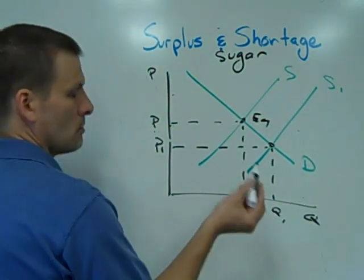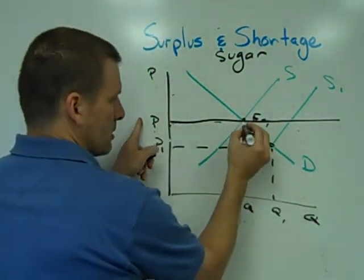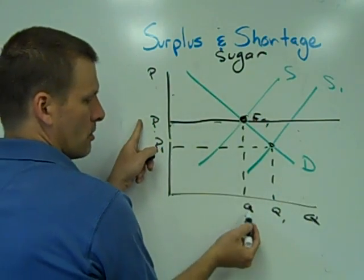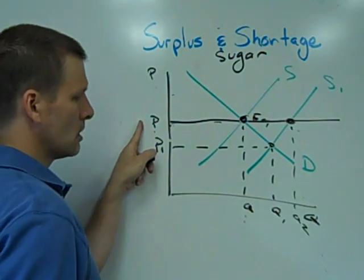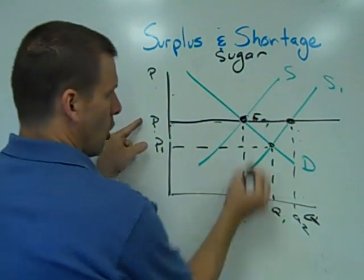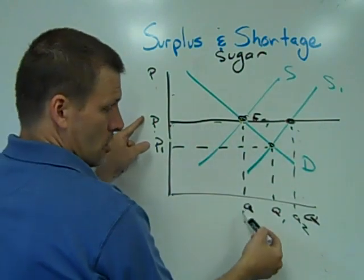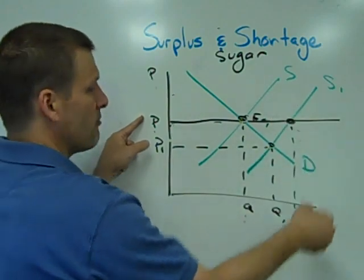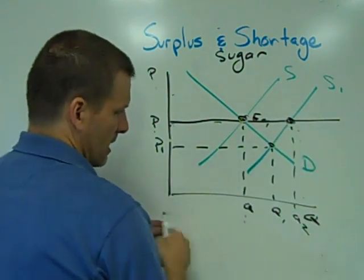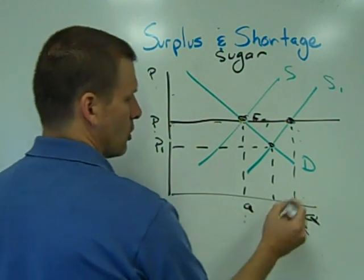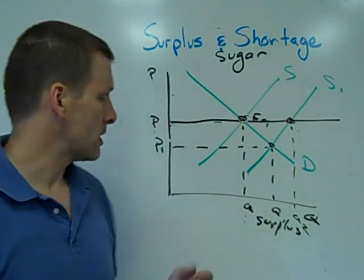But if it didn't — if for whatever reason supermarkets held the price constant at P — then our price intersects demand here at Q, but it's intersecting our new supply curve way out here at Q2. That means at this artificially high price, only Q is demanded. But at this artificially high supply, producers are much more willing to have a lot of extra supply available. So Q2 is available in the market. Supply is outstripping demand — Q2 is much greater than Q — and that is called a surplus. If the supermarket does not lower their price of sugar, they're going to have unsold material.